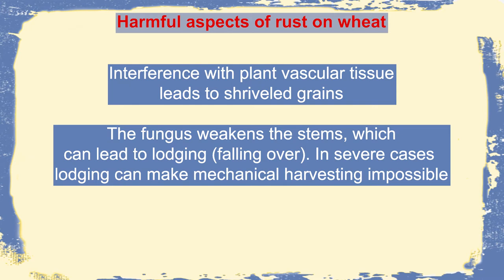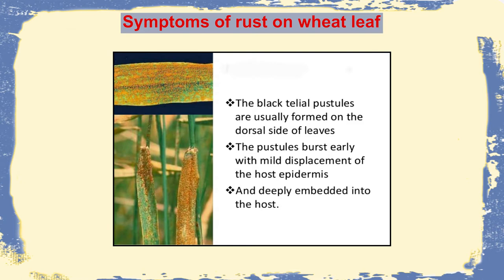In severe cases, there may be mechanical harvesting impossible. The common symptoms of wheat rust include black telial pustules formed from teliospores, and they are actually formed on the dorsal side of leaves. These pustules will burst early, and there will be slight disruption or change in the host epidermis or the epidermis of the leaf tissue. Sometimes this particular fungus will get deeply embedded into the host.